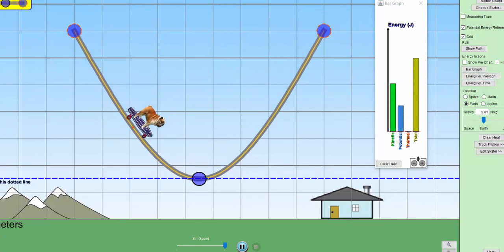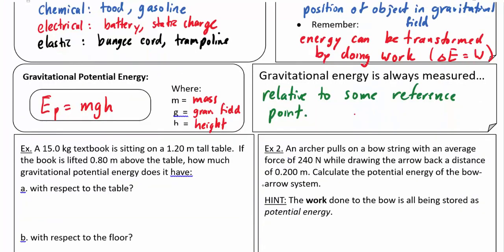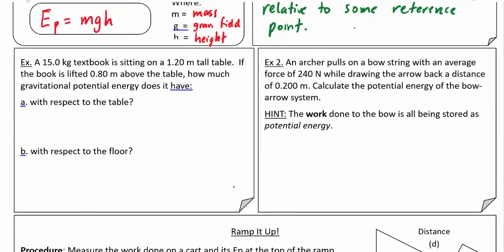As an example here, we've got a textbook sitting on a table. The book is lifted 0.8 meters—a very heavy textbook, 15 kilograms—being lifted above the table. How much potential energy does it have with respect to the table and with respect to the floor? I'm just going to draw a picture here. This is a very hefty textbook, and the table is 1.2 meters tall. We're going to lift this textbook up so that it's another 0.8 meters above the table.